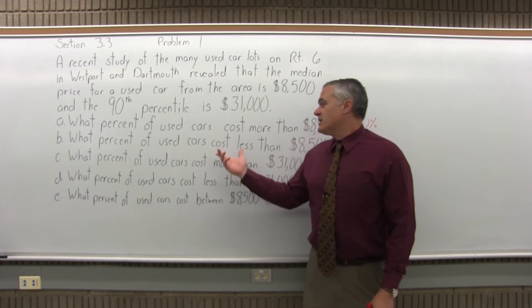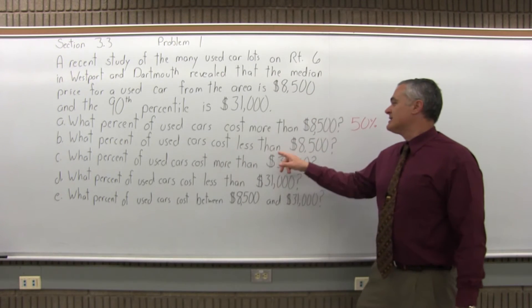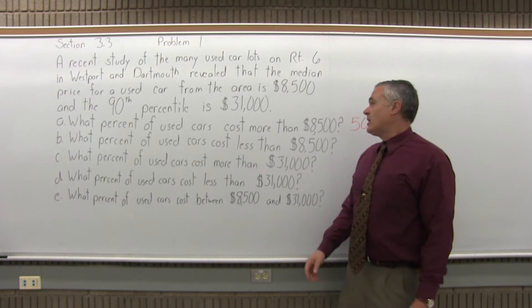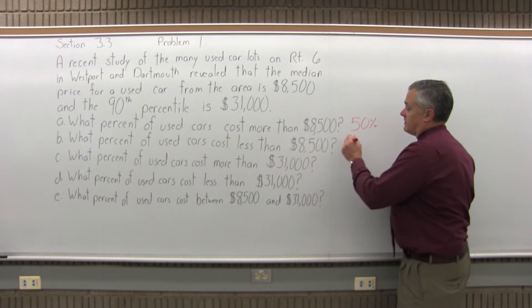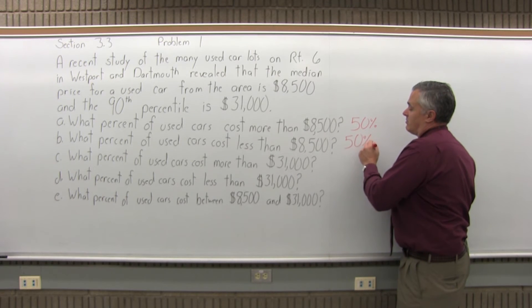Part B says what percent of used cars cost less than $8,500? Well, 50 percent cost more, the other 50 percent cost less because the $8,500 is the middle price.